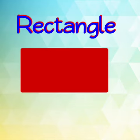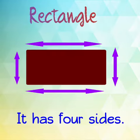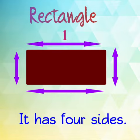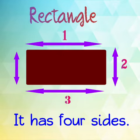In a rectangle we have four sides. We have four sides: one, two, three and four. These are four sides.